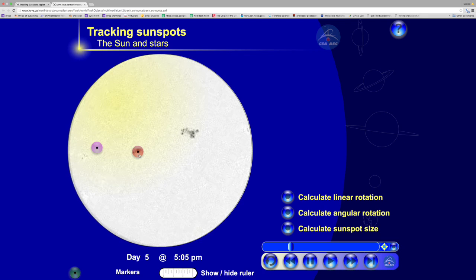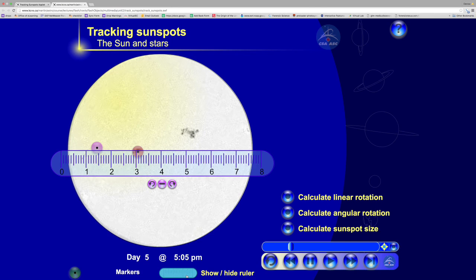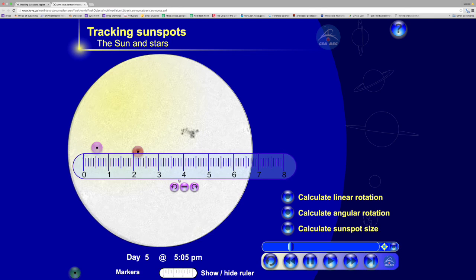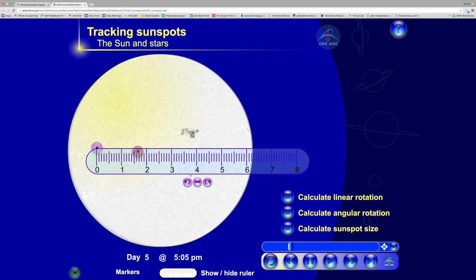I'll mark Day 5 at 5:05 p.m., then I'll get my ruler and actually measure from one dot to the other. I'll put that on my piece of paper and write Day 5, 5:05 p.m., and mark down my measurement.